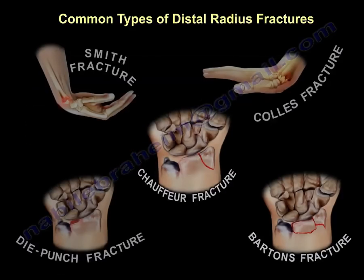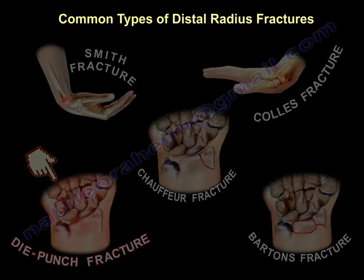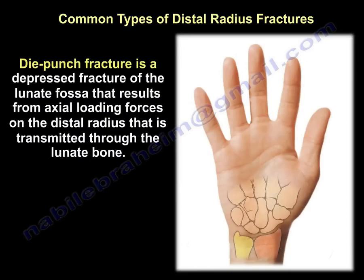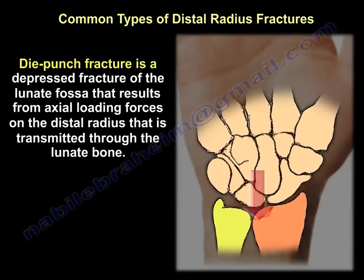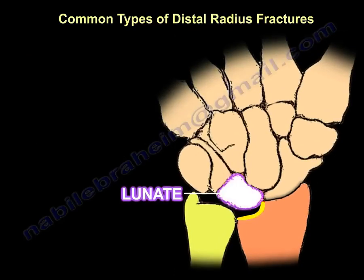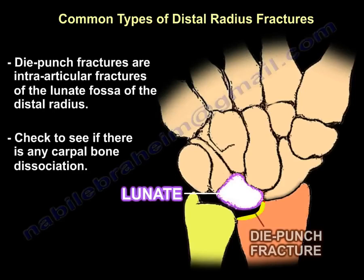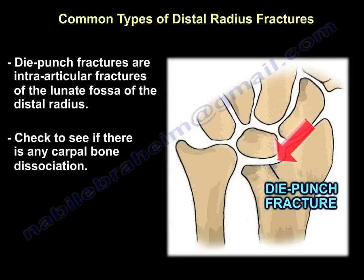The next type is the die punch fracture — a depressed fracture of the lunate fossa caused by an axial load transmitted through the lunate bone. These are intra-articular fractures of the lunate fossa. Always check to see if there is any associated carpal bone dissociation.